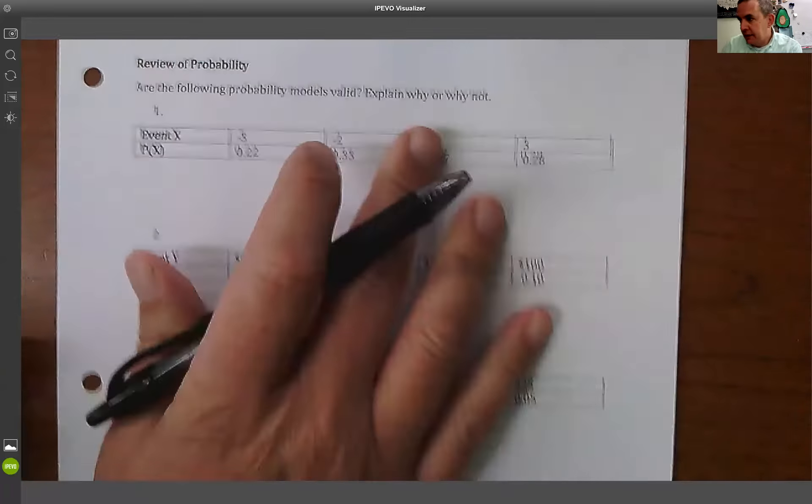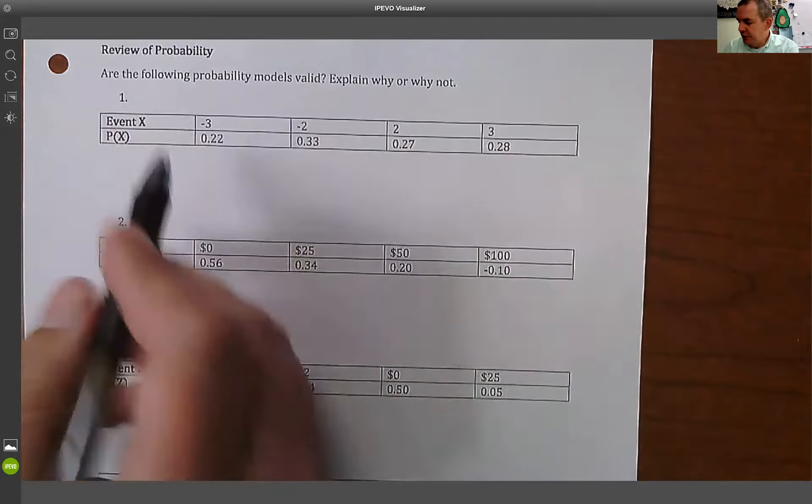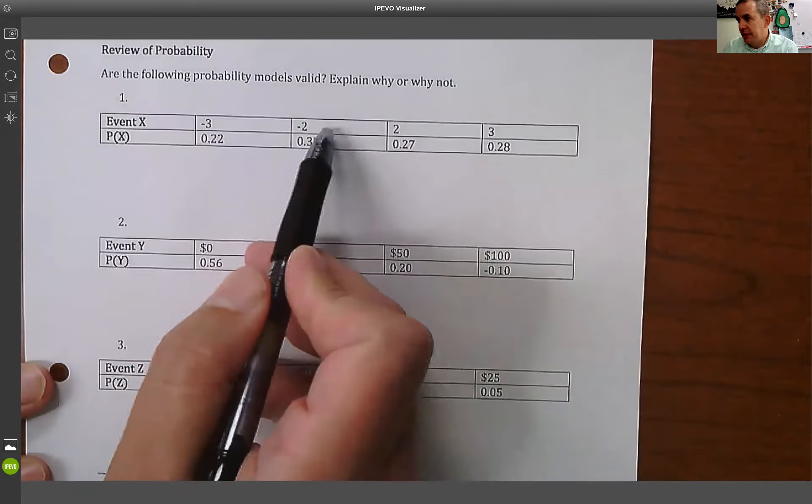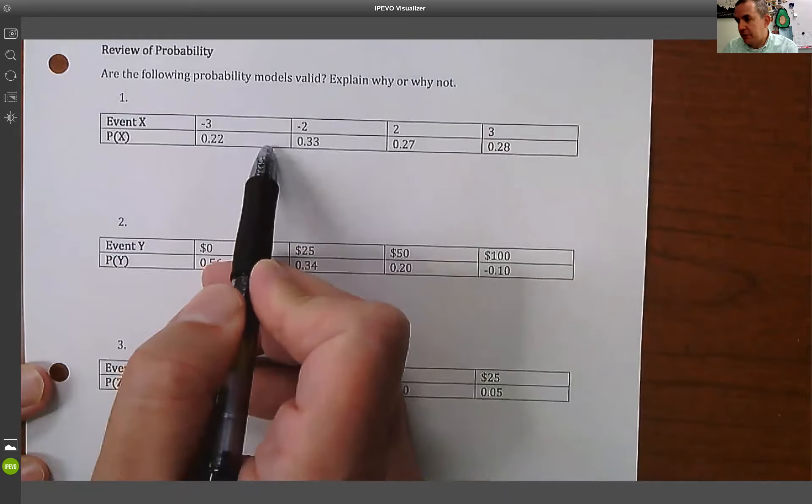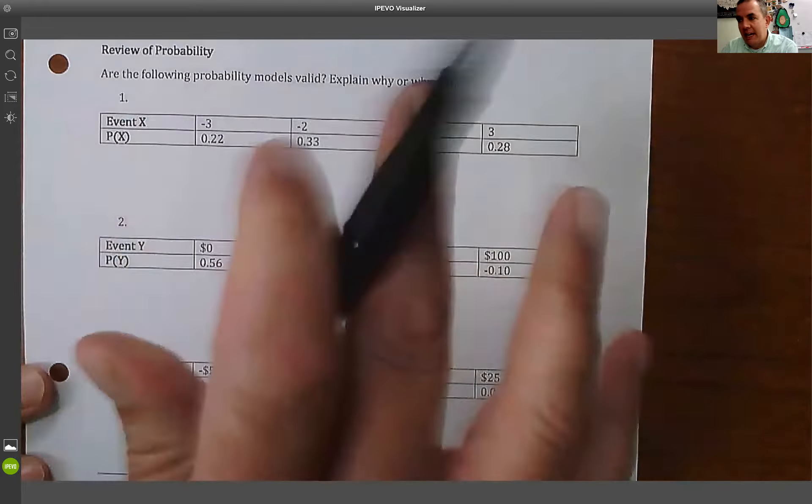Okay, let's go ahead and do a quick review to get ourselves caught up on the whole idea of probability. This is what we talked about last week. These are called probability models. They give you the events, the outcomes, and then the corresponding probability.